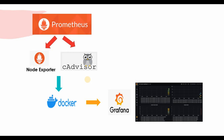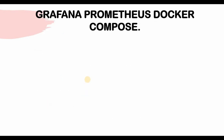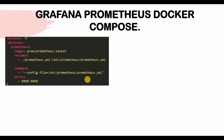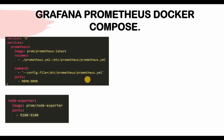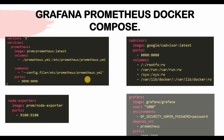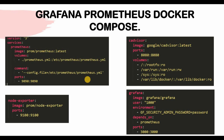By the end of this tutorial, you will have a working setup. The Docker Compose file will have four sections: one for Prometheus (with volume, command, and ports), one for Node Exporter, one for cAdvisor, and one for Grafana. We will also have a prometheus.yaml file where we configure the scraping of content.